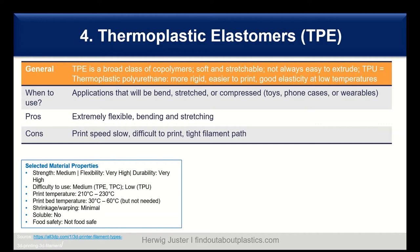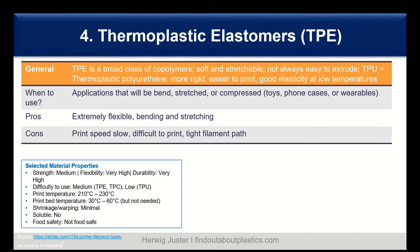Number five is polyamide, PA, also known as nylon. Polyamide filaments have real strength, flexibility, and durability. You can also color them with dyes, either before or after printing — common grades include 618 and 645. When to use polyamide? When you need applications that work as functional prototypes, tools, and mechanical parts like hinges, buckles, or gears. These are clearly functional applications.